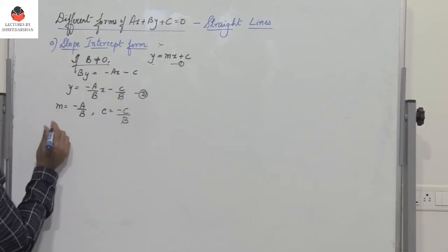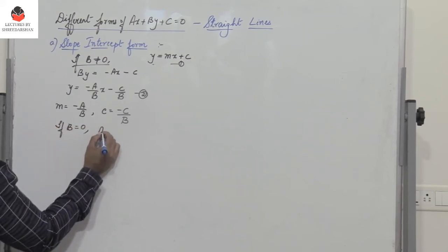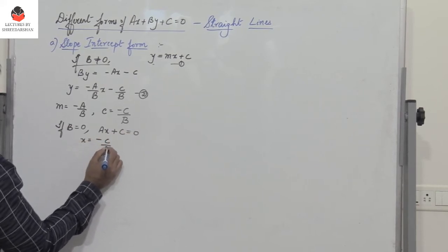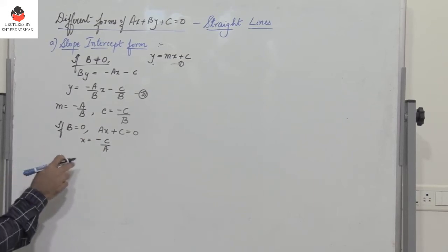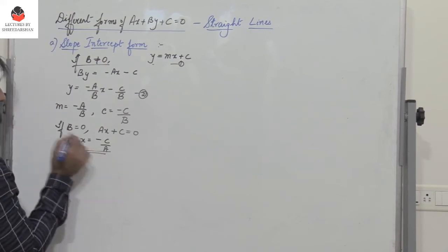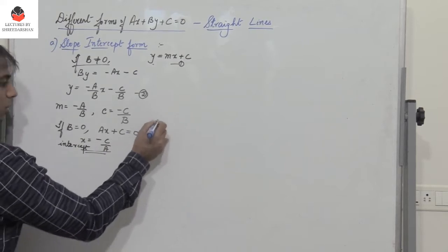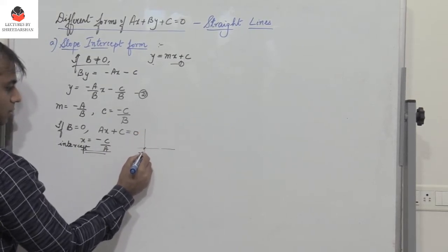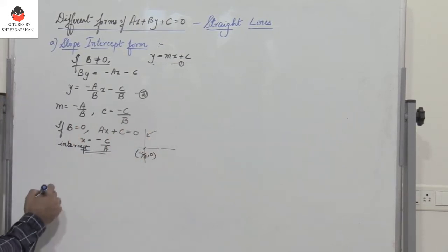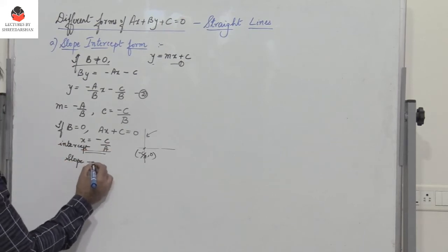This result holds if B is not equal to 0. Now if B equals 0, then we have AX plus C equals 0, or X equals minus C by A. X equals minus C by A is a point on the X axis, so the X intercept is minus C by A. This will be a vertical line passing through minus C by A comma 0, and hence the slope is undefined.